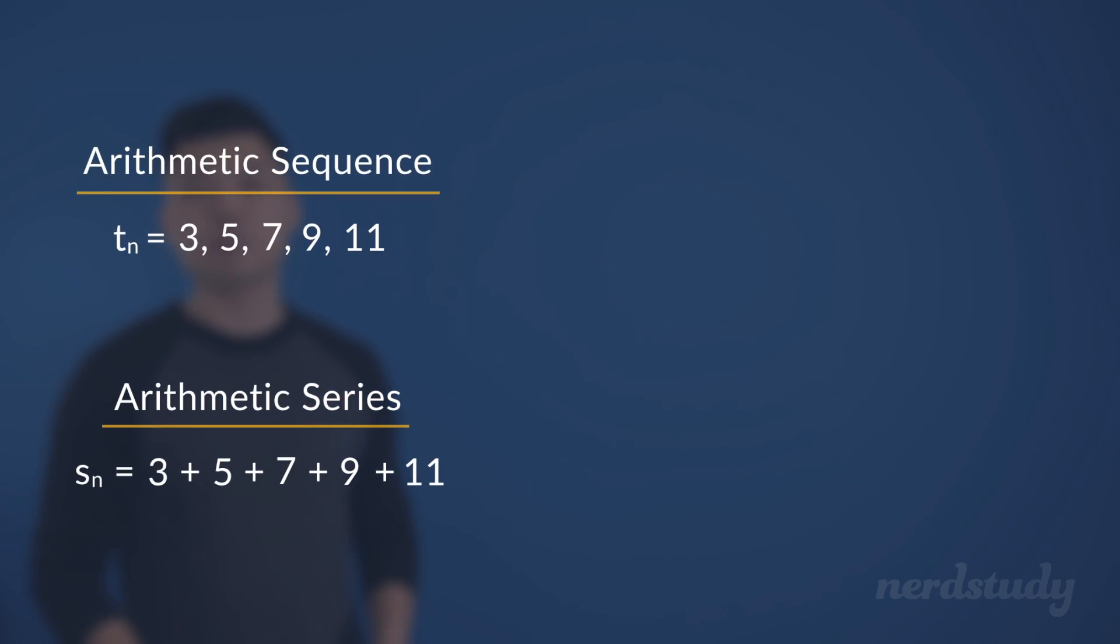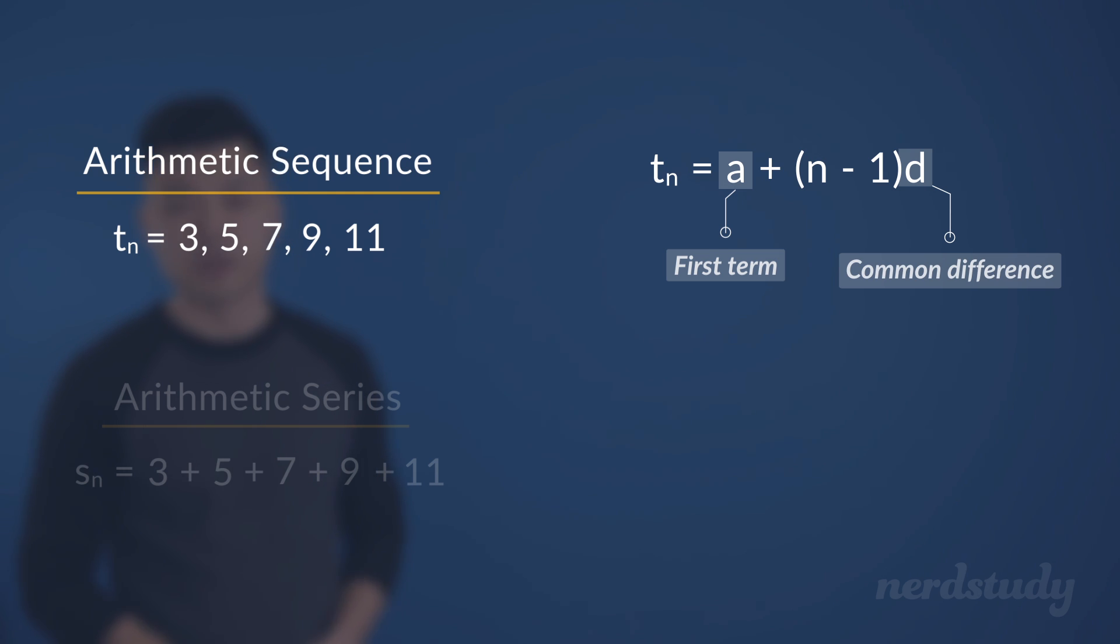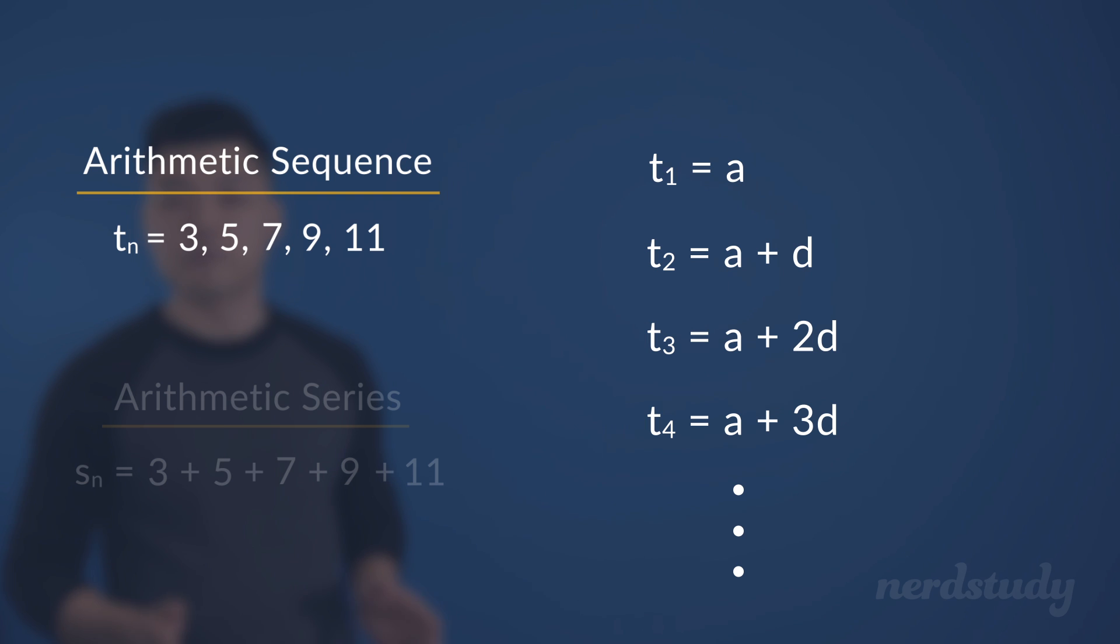Alright, so first of all, let's start by focusing on arithmetic sequences first, and bring up the formula for it again. So, the a here stands for the first term in the sequence, and the d stands for the common difference. And if you remember, this formula is essentially a summarized version of this, which describes each term as the first term plus the multiplication of the difference between the terms, depending on which term we're on. So, as you can see, each of these equations represents each one of these terms in the sequence.